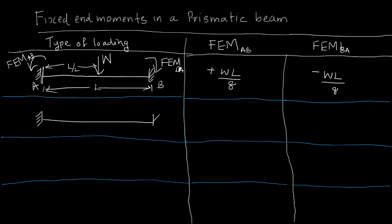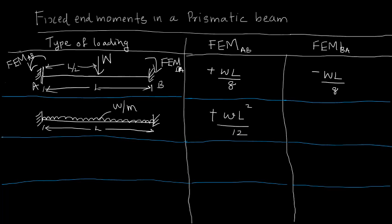The second loading condition is a fixed end beam of length L carrying a uniformly distributed load of w per meter. The fixed end moments are: FEM-AB = +wL²/12 and FEM-BA = -wL²/12.